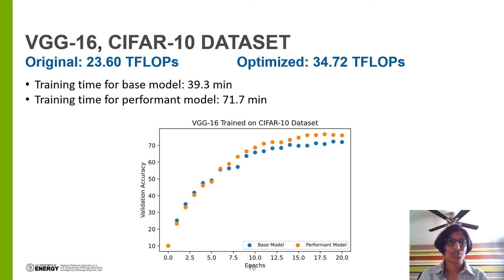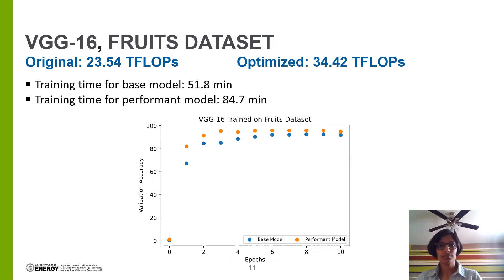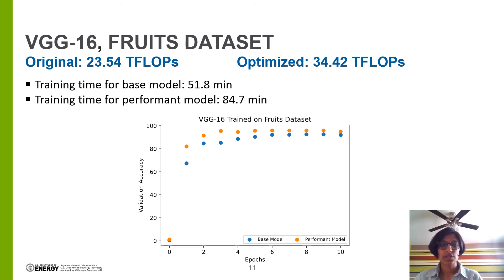In this case, the high-FLOPs model did take longer to train. These results show the training of VGG16 on the Fruits dataset, and the results are similar to the previous slide. There are no tradeoffs in accuracy in choosing the high-FLOPs model, and there's about a 10 teraflop increase in performance per one forward pass over the network, along with about a 30-minute increase in training time for the optimized model.